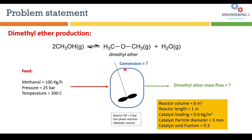We need to find the conversion of the reaction under the given conditions and the dimethyl ether mass flow rate in the product stream. Additional information: reactor volume is 8 cubic meters with 1 meter reactor length. The catalyst is gamma alumina with a loading of 0.6 kg per cubic meter. The catalyst particle diameter is 3 millimeters and the catalyst void fraction is 0.3. We assume no pressure drop inside the reactor.